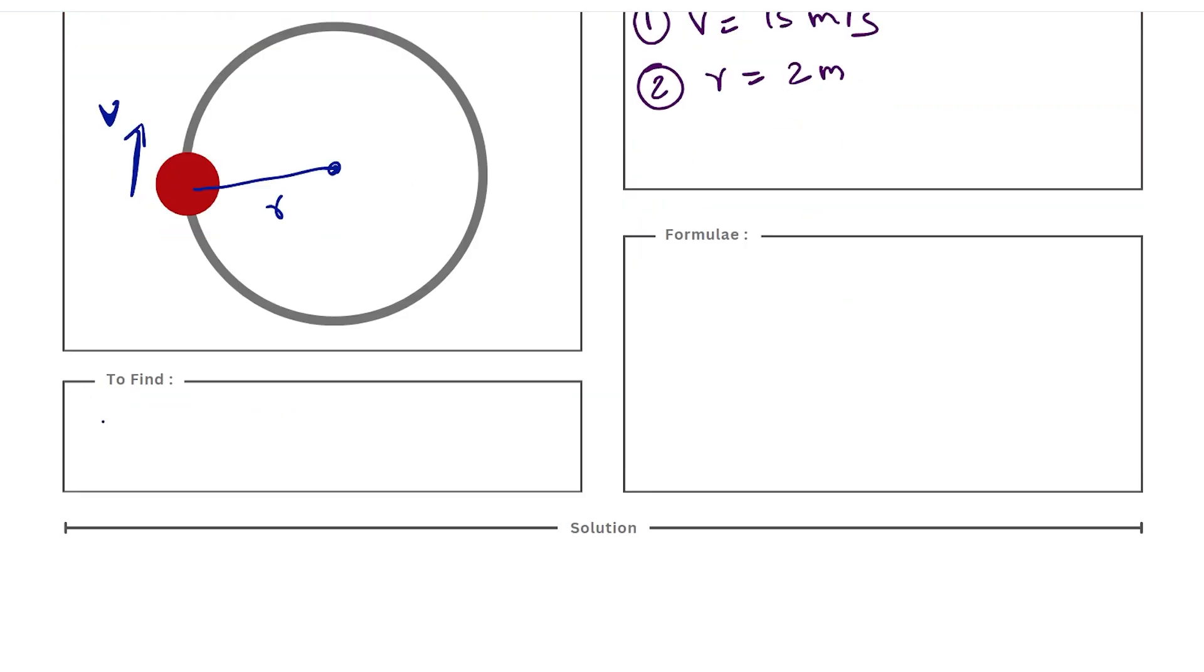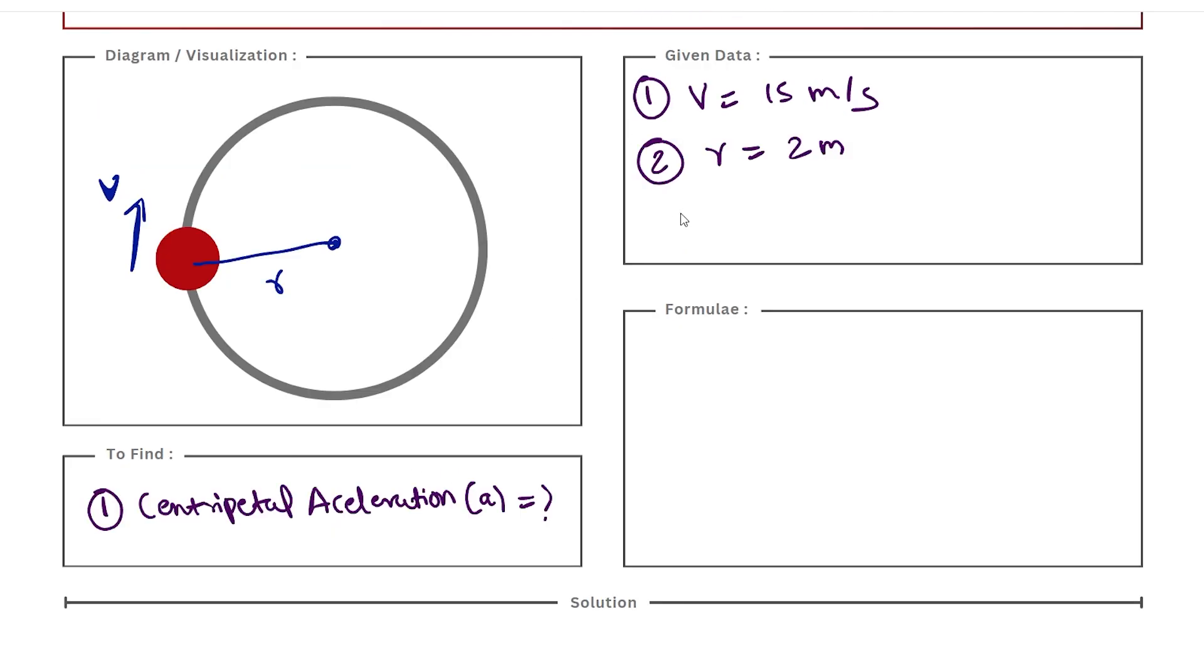Now we are required to calculate only one quantity, that is the centripetal acceleration, represented by the term 'a'. In order to calculate acceleration from these given values, we need to use a very simple formula: a, that is centripetal acceleration, is equal to tangential speed squared divided by r. And we can right away solve this question because we know the value of v and we know the value of r.